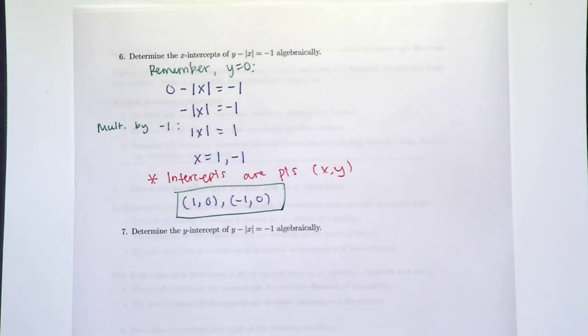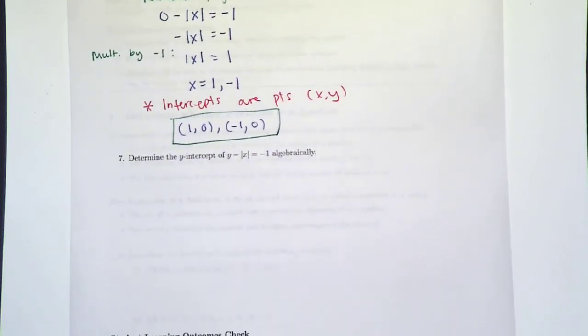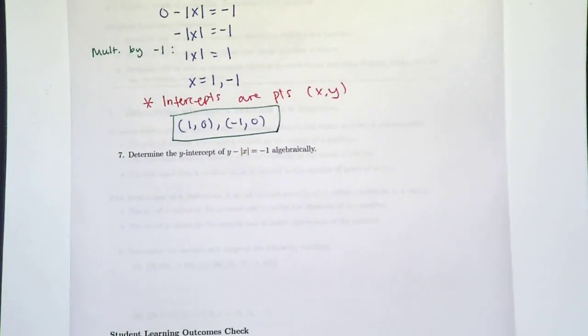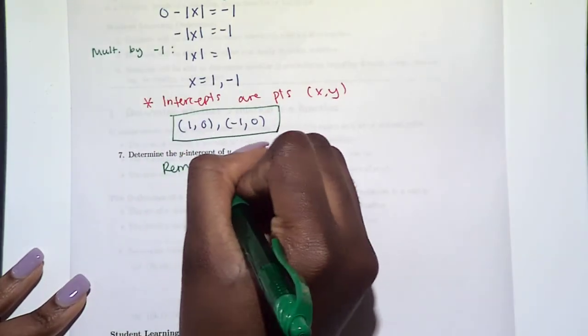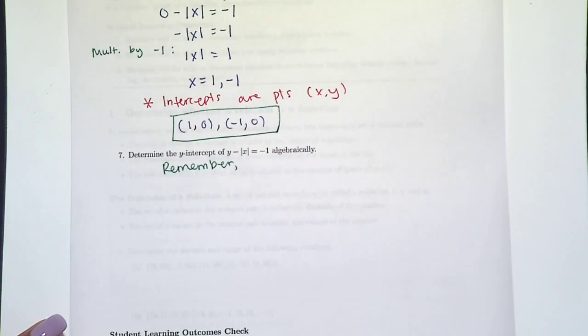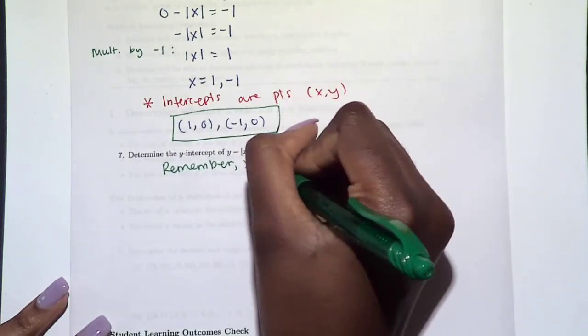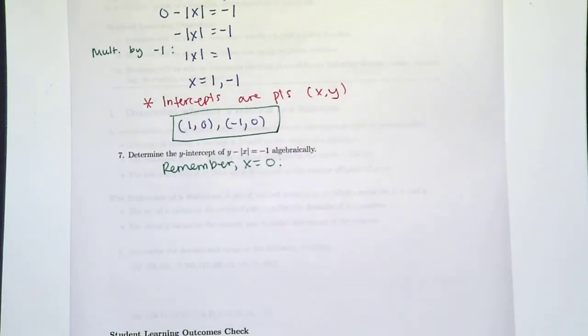Alright, sorry it keeps refocusing whenever I put my hand here. And then finally, let's look at the y-intercept or intercepts of this problem. Same thing: what's the main thing we need to remember about y-intercepts? Well, if we have a y-intercept, that means that x must be zero. So that's exactly what we're going to use to answer this question. We're going to let x equal zero.